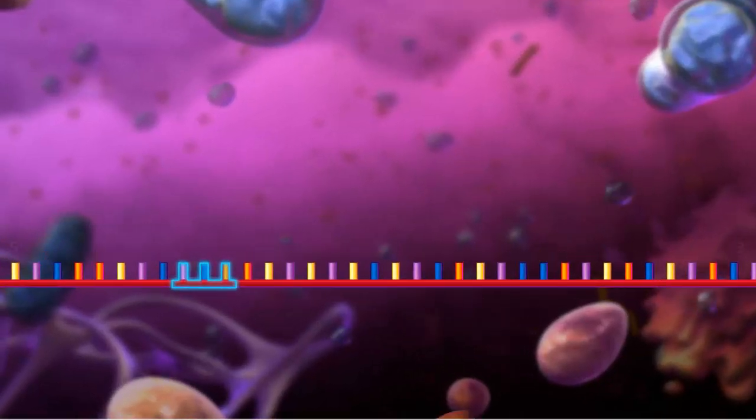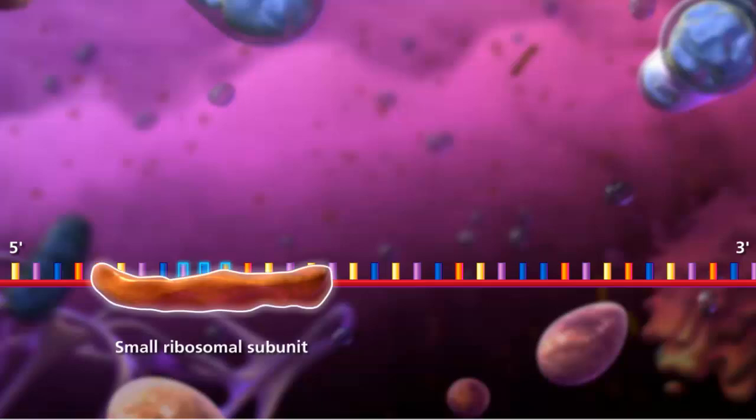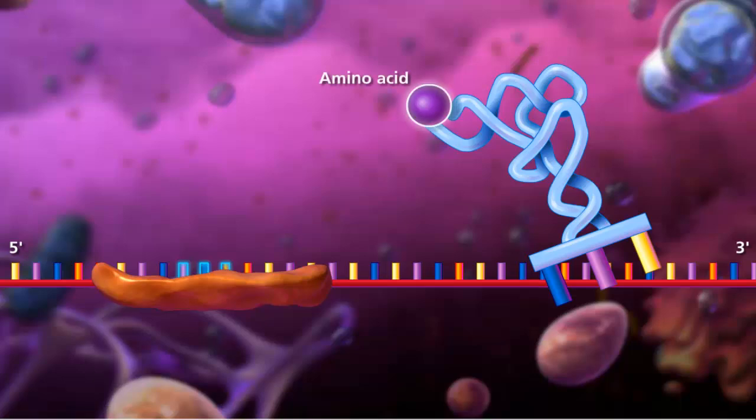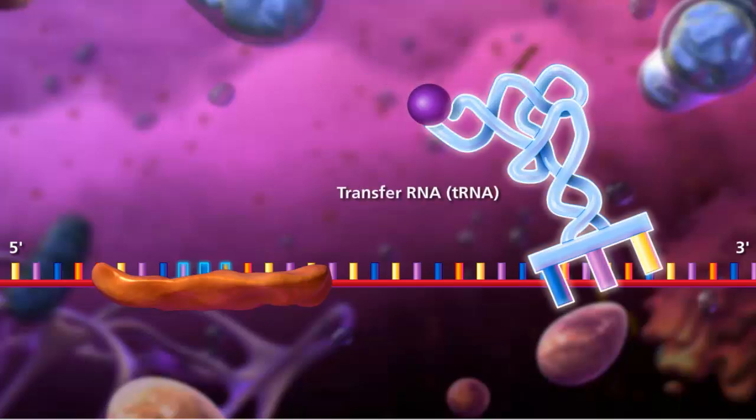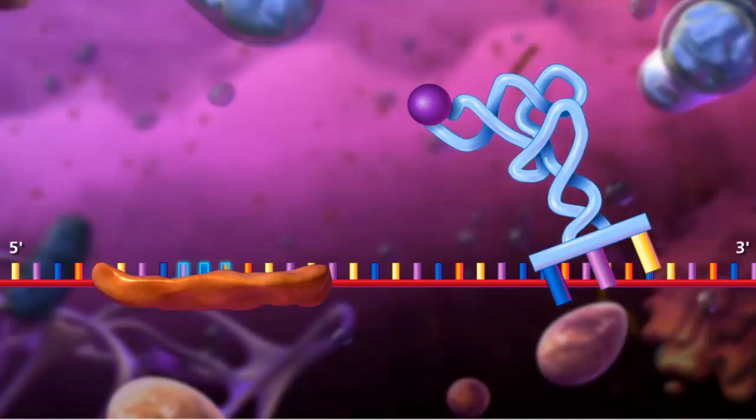Translation begins with the messenger RNA strand binding to the small ribosomal subunit upstream of the start codon. Each amino acid is brought to the ribosome by a specific transfer RNA molecule. The type of amino acid is determined by the anticodon sequence of the transfer RNA.